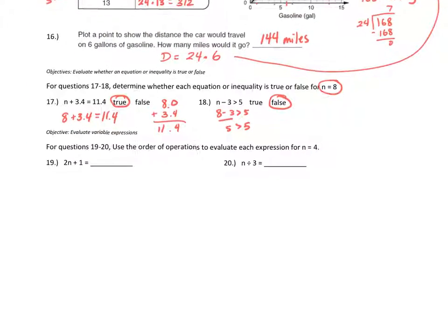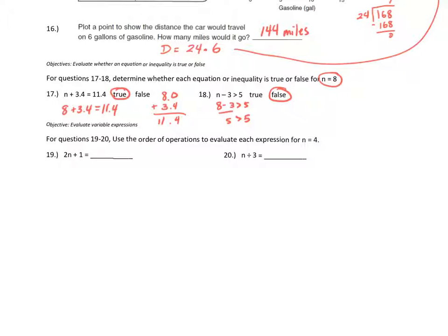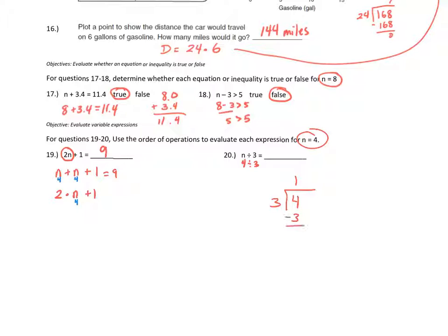Finally, I'll evaluate variable expressions using the order of operations for n equals 4. Question 19 is 2n plus 1. The term 2n means 2 times n, so I can write this as 2 times 4 plus 1, which equals 9. For question 20, n divided by 3 with n equals 4 gives 4 divided by 3. Three goes into 4 once with a remainder of 1, which I write as a fraction: 1 and one-third.